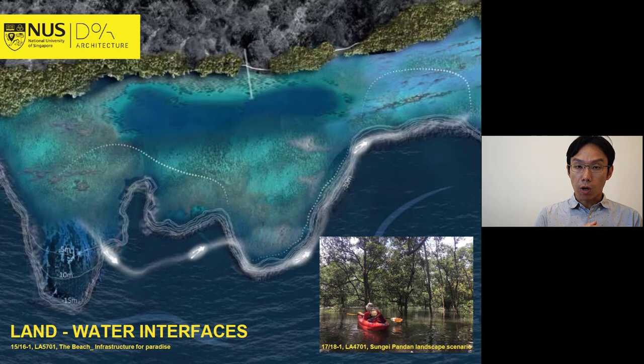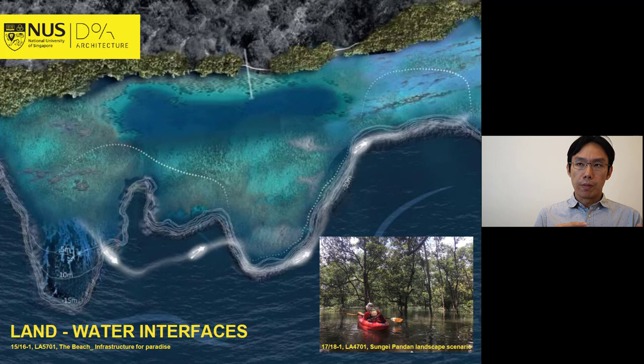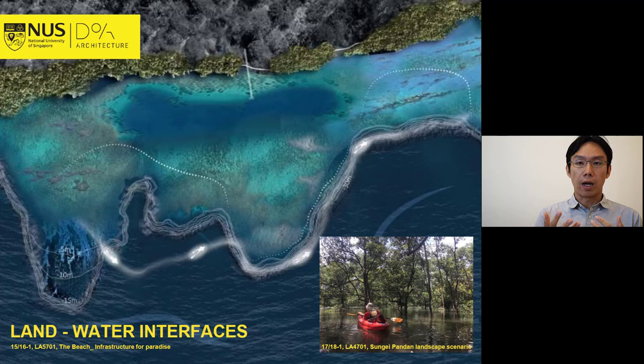We also talk about rivers and interfaces between water and land. The background is actually a project in which they looked at a national park, specifically a marine reserve, and how exactly landscape architects can talk not only about land but also about water and how water interfaces with the landscape itself. On the bottom right, you see one of our students at Sungai Pandan — the idea whereby mangroves are essentially also a kind of landscape we can work off, leveraging this interface between water and land for the betterment of our built environment.